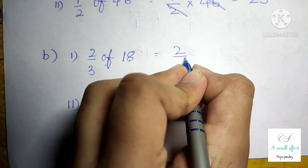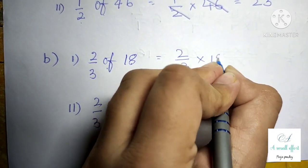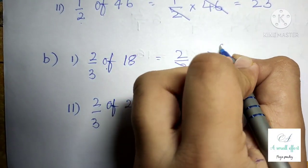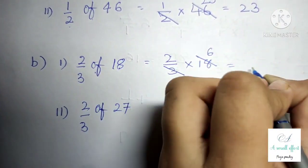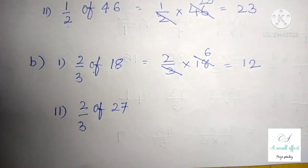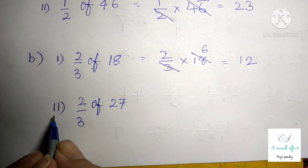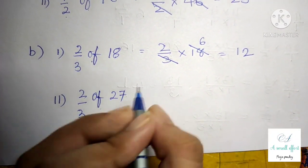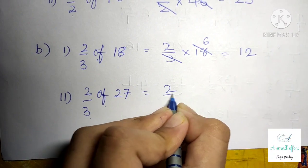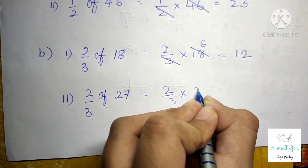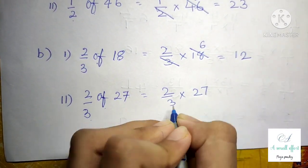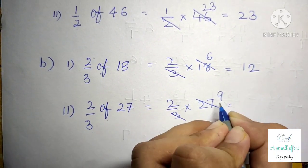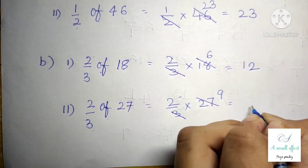We can write this as 2 by 3 into 18. In the 3 times table, 18 comes 6 times, so 6 twos are 12. Second part is 2 by 3 of 27. We can write this as 2 by 3 into 27. In the 3 times table, 27 comes 9 times, so 9 twos are 18.